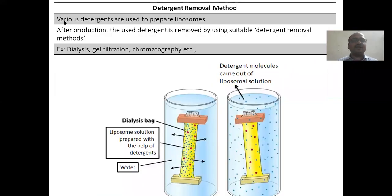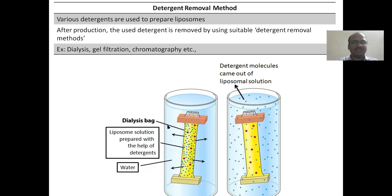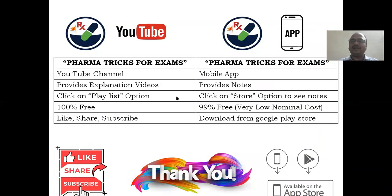Finally, the detergent removal method: in this method, various detergents are used for the preparation of liposomes. We use both lipids, aqueous phase, as well as a surfactant. Later, we remove the detergent using various methods like dialysis, gel filtration, or chromatography. Using a dialysis bag, the liposomal solution with detergents is placed inside and the detergents are removed into the surrounding water — that is how I will end this session.